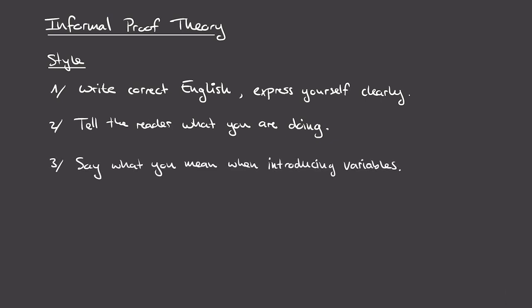A related point: you should always say what you mean when introducing new variable names. Whenever a new variable comes up in your proof, say what it represents in words — even if you're defining it through a formula. For example, instead of just writing 'let x = y − z', you could write 'let x = y − z denote the difference between y and z.' If x becomes more complicated, a verbal description helps the reader understand conceptually what you're trying to do with that variable.